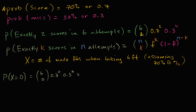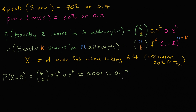I calculated it ahead of time. If we round the decimal to the nearest thousandth, this is approximately equal to 0.1% — roughly a one in a thousand chance of missing all six free throws.